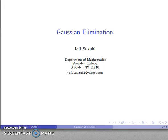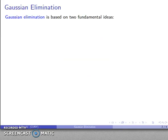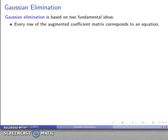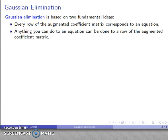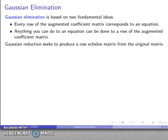One of the standard techniques in matrix algebra is known as Gaussian elimination, and this is based on two fundamental ideas. Every row of an augmented coefficient matrix corresponds to an equation in standard form, and anything you can do to an equation in standard form can be done to a row of the augmented coefficient matrix. When we talk about Gaussian reduction, we want to produce a row echelon matrix from the original matrix.